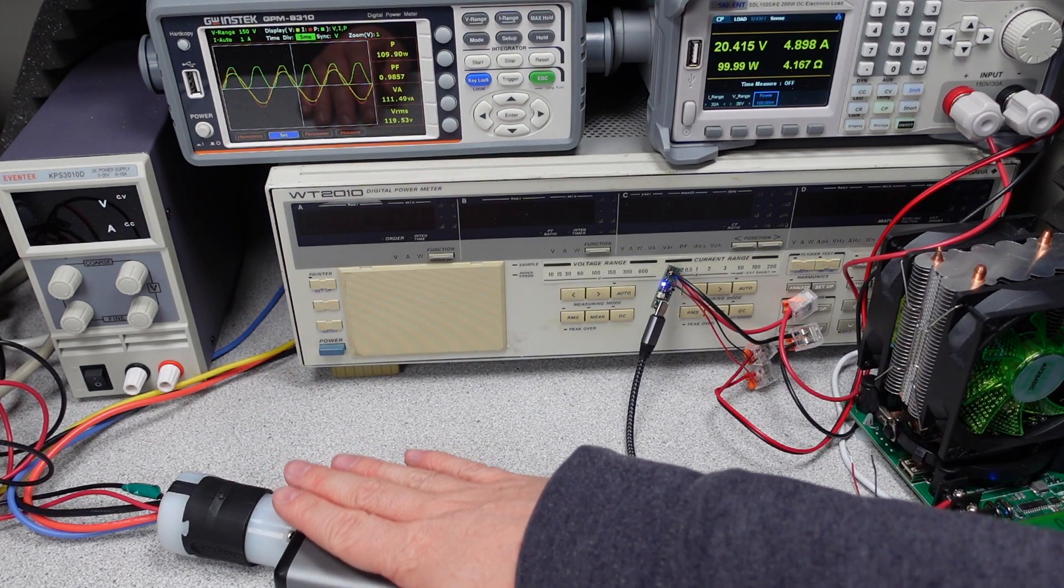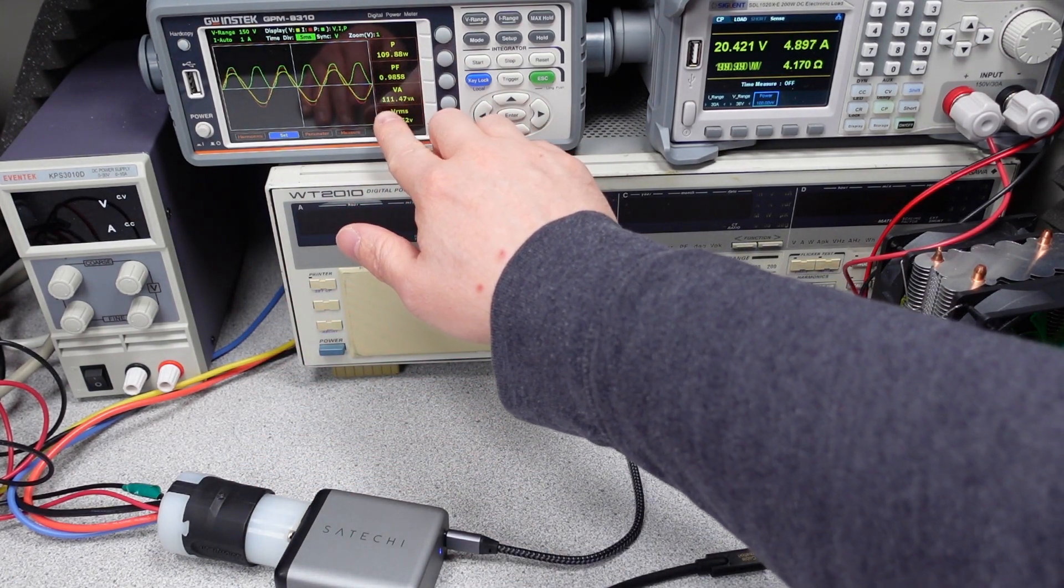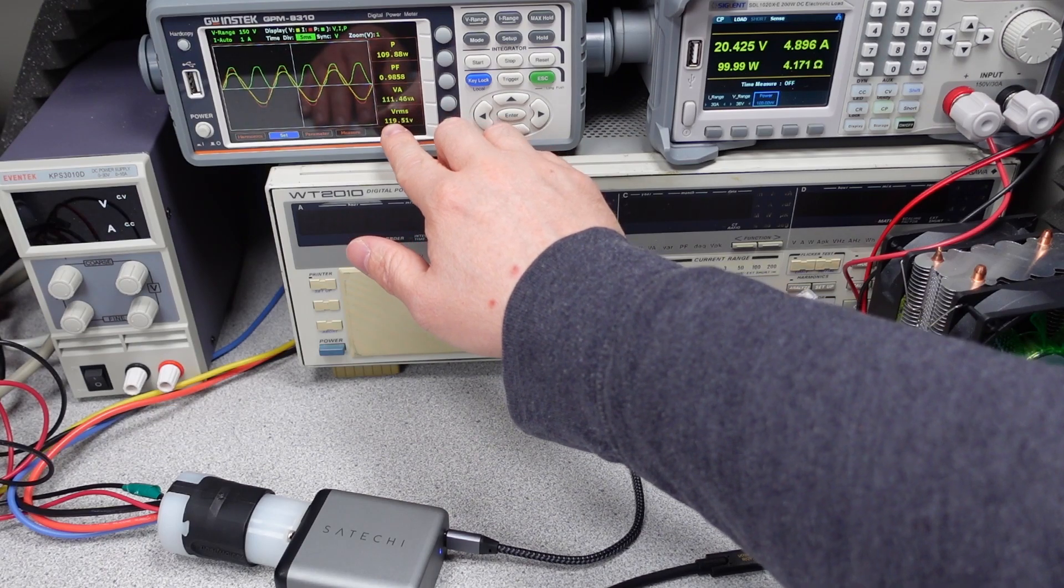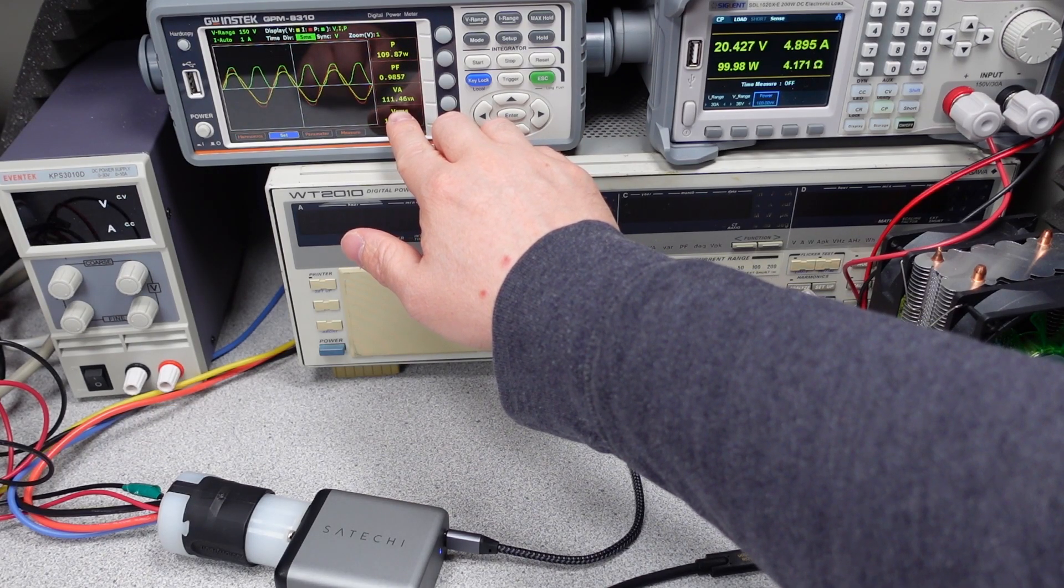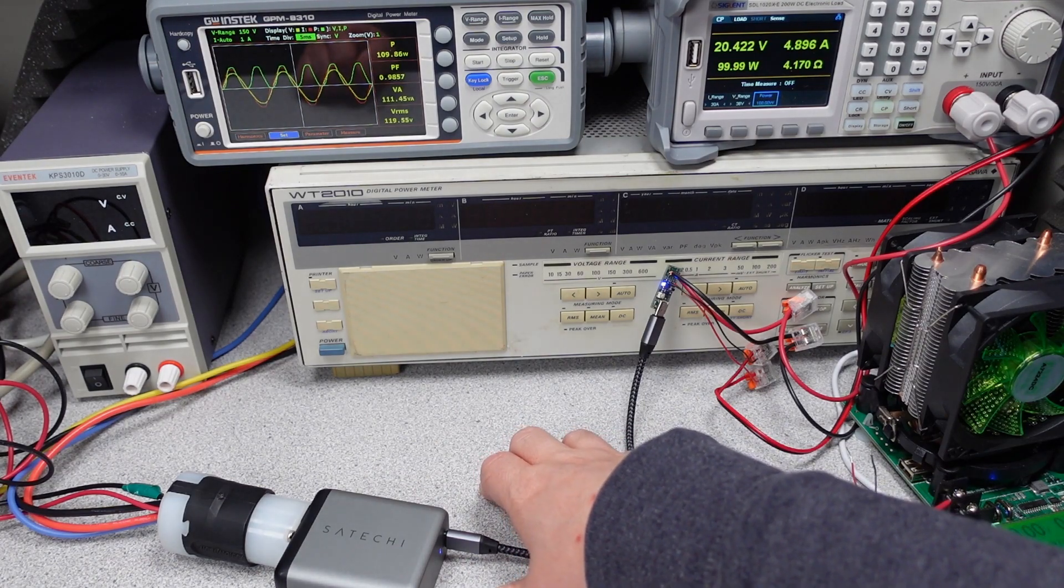Especially when it's drawing those high amounts of power, it will be doing its thing. One of the things we see is the VA is about half, so we're using half of the current as the other power adapter, RMS. And overall, the waveform just looks a lot cleaner.